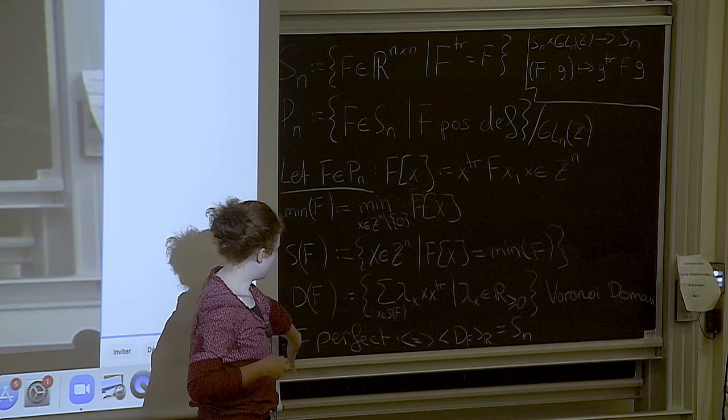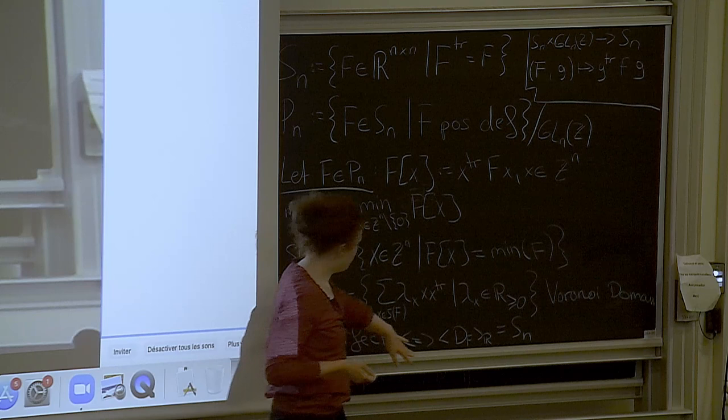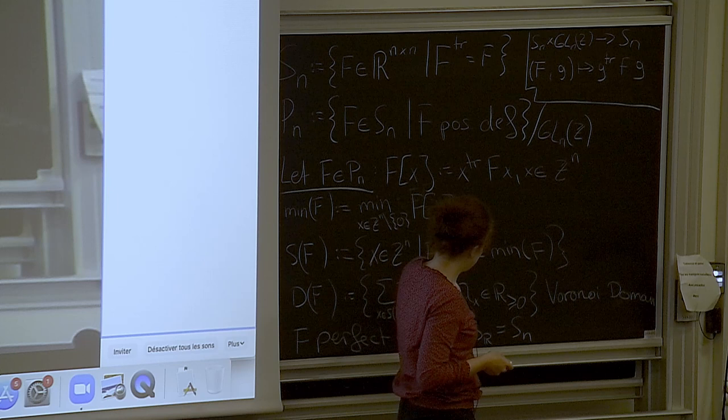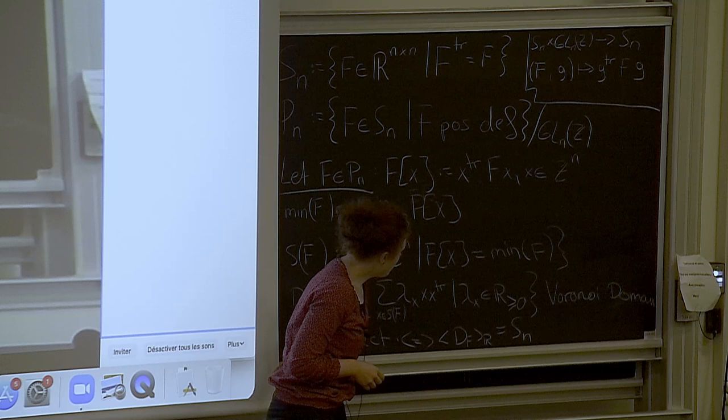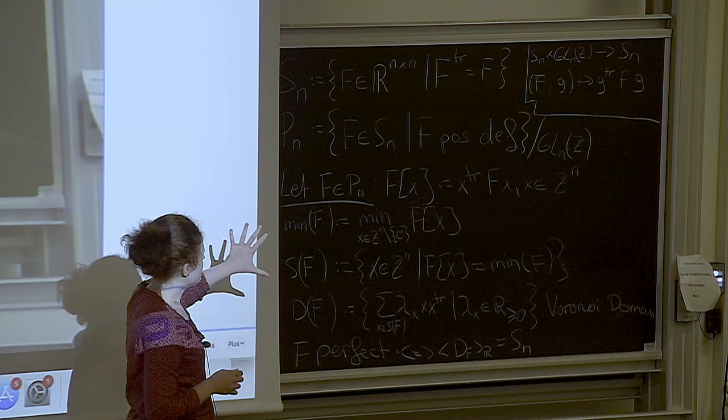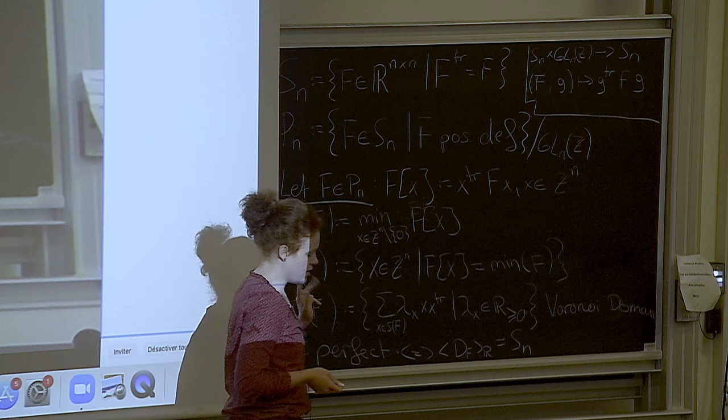And one thing that is going to be important for us or one of the main things that we're going to compute in the following is the Voronoi domain of F, which includes the linear combinations of the rank one matrices defined by the minimum vectors of F with scalars greater than or equal to zero. And another important notion is that of our form F being perfect. So far, this is what I wanted to say regarding the notation we've already seen.